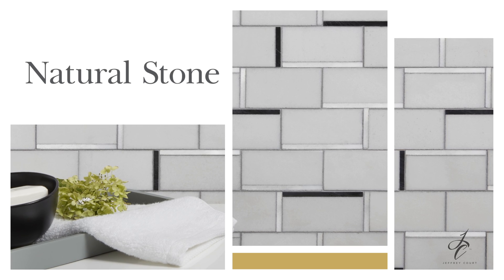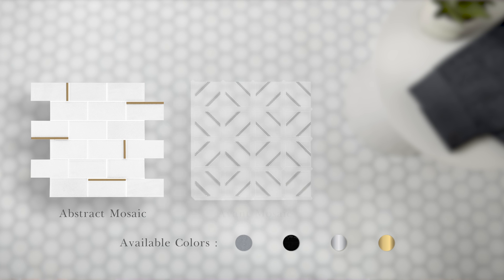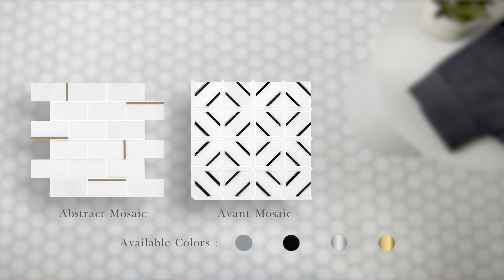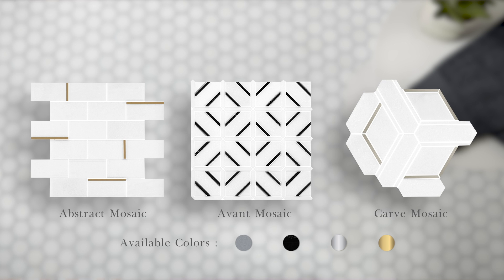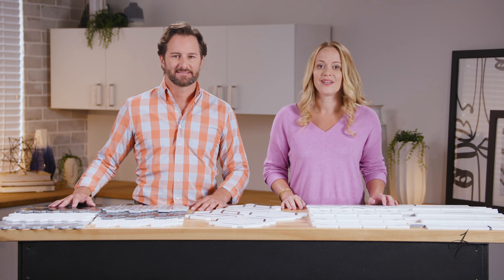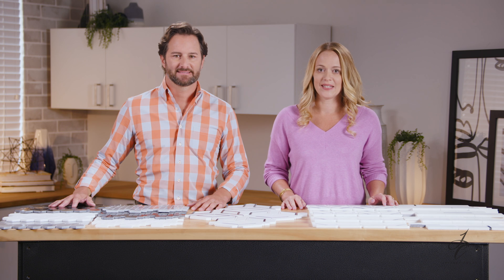There are three stone-on-stone or metal-on-stone blended mosaics in this chapter: Abstract, Avant, and Carve. These mosaics start with a Thassos base marble in a honed finish and feature Bardiglio, Nero Marquina, and Thassos marbles in a polished finish. These stones are classic and are sure to make any kitchen backsplash or bathroom wall stand out.